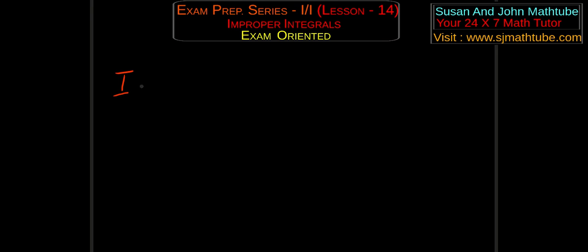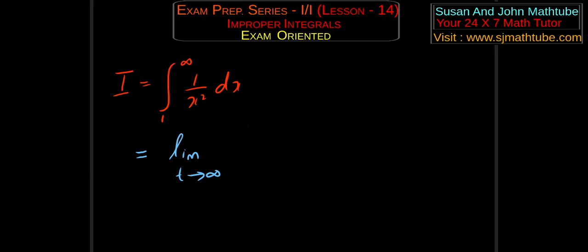Are you ready with pen and paper? Evaluate the integral from 1 to infinity of 1 by x squared dx. Graphically I know this is going to exist. The technique is very simple — our aim is to evaluate things without using the graph. That is the greatest thing Newton and Leibniz contributed to mathematics: a technique through which we can bypass the graph and still get the answer. What we do is convert this into a limiting problem: we write limit as t tends to infinity of the integral from 1 to t of 1 by x squared dx — we simply replace infinity with the limit.